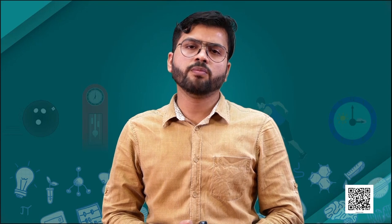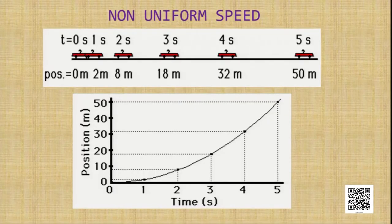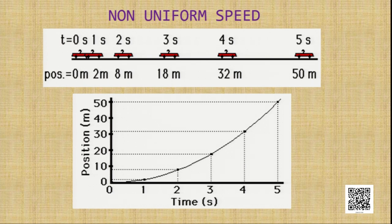When the object is executing non-uniform speed or non-uniform motion, we take an example. At the beginning it is at the origin. After one second it has reached 2 meter; after another second it is at 8 meter; after the third second it is at 18 meter. Although the time period is the same, the distance travelled is not equal — it is in non-uniform motion. Similarly, at the fourth second it is at 32 meter and at the fifth second it is at 50 meter.